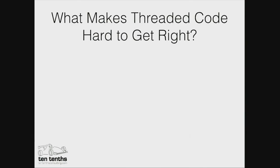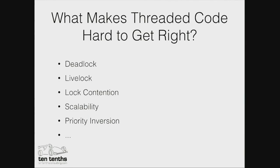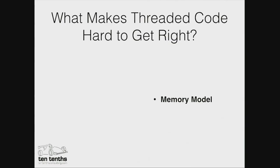So what is it that makes threaded code hard to get right? Given that the people in this room are a bunch of very experienced programmers, you can create a long list of things: deadlock, livelock, lock contention, scalability, priority inversion, and the list goes on. I'm not going to talk about any of these. They are real problems, very difficult to get right. But actually I don't think this is the most difficult problem. The most difficult problem with multi-threaded programming is one that nobody ever talks about, and that is the memory model.